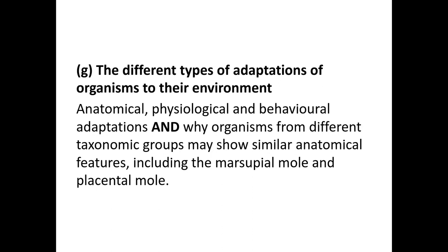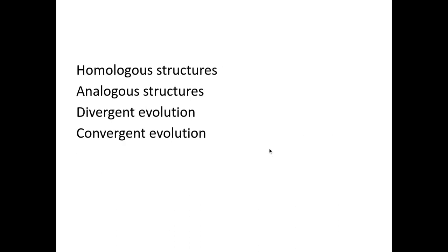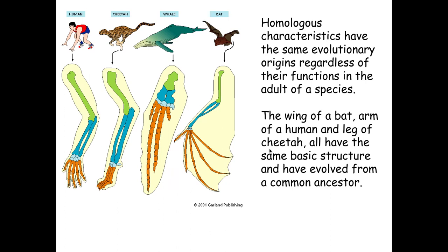Now we're going to move on to have a look at the terminology we need to know to explain the next part of the spec point. So homologous structures — this is where we have the same evolutionary origin, and therefore the structures are similar in different species.